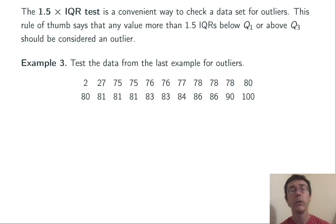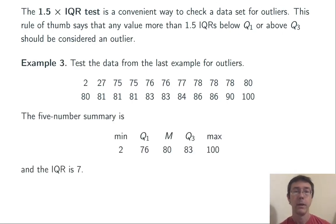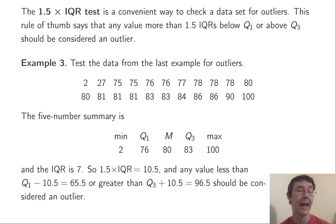Let's test the data from the last example for outliers. The five-number summary is min = 2, Q1 = 76, M = 80, Q3 = 83, max = 100. The IQR is 7. So 1.5 times IQR = 10.5, and any value less than Q1 - 10.5 = 65.5 or greater than Q3 + 10.5 = 96.5 should be considered an outlier.